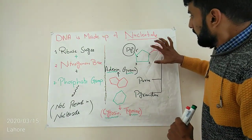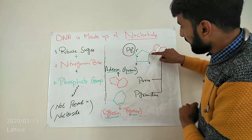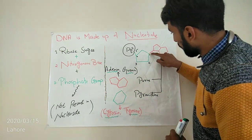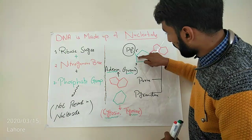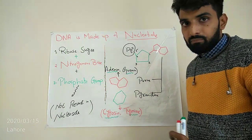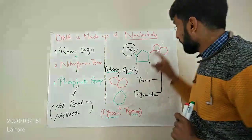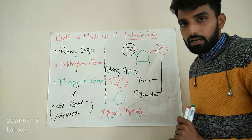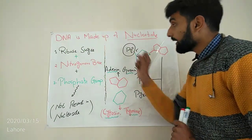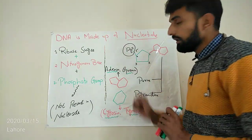So there are, you can see the five carbons in ribose sugar. Carbon number one, carbon number two, carbon number three, carbon number four, carbon number five. The nitrogenous base will be present at carbon number one, while the phosphate group will be present on carbon number five.